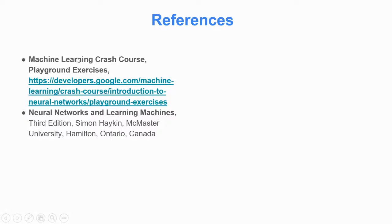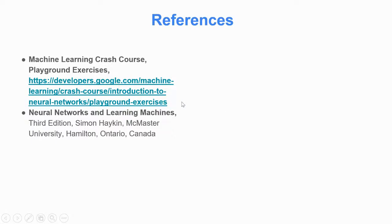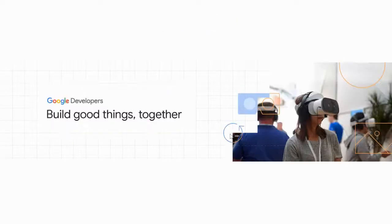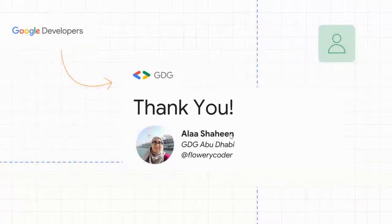For resources, there is a nice machine learning crash course provided by Google at developers.google.com, with a crash course introduction to neural networks and playground exercises where you can run the examples shown here. There is also a very famous book called 'Neural Networks and Learning Machines' used by many universities around the world to teach neural network courses. Thank you very much for your time — I hope you enjoyed the session.